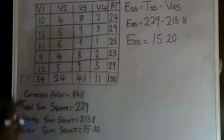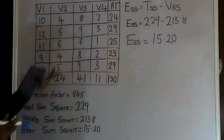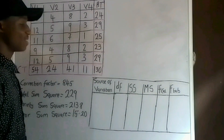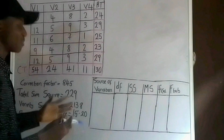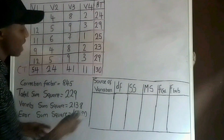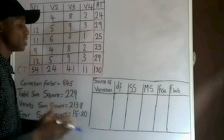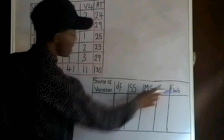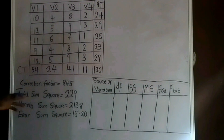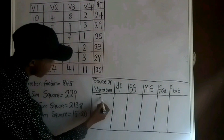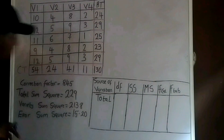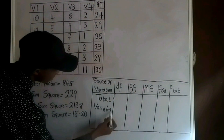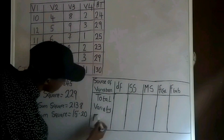Now we proceed to compute the ANOVA table, since this is one-way ANOVA. A typical ANOVA table has: source of variation, DF (degree of freedom), SS (sum of squares), MS (mean square), and F calculated. Our sources of variation are: Total, Variety, and Error.